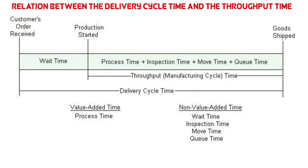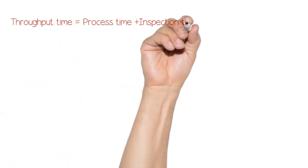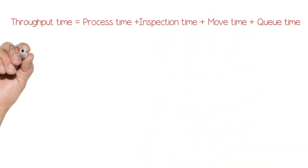Throughput time is equal to process time, inspection time, move time, and queue time. Let me explain what is process time, inspection time, move time, and queue time.